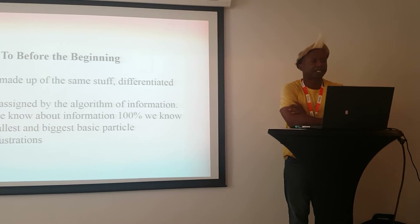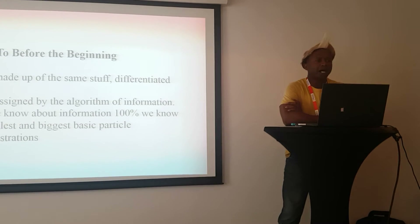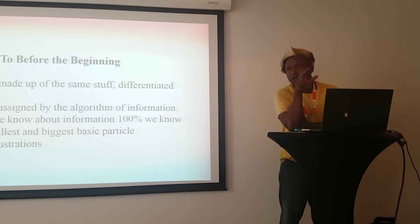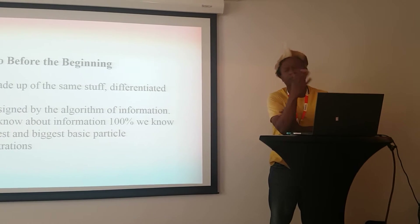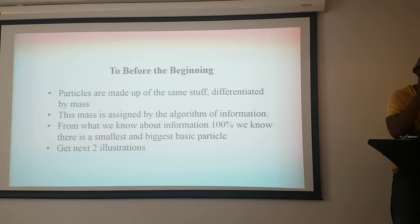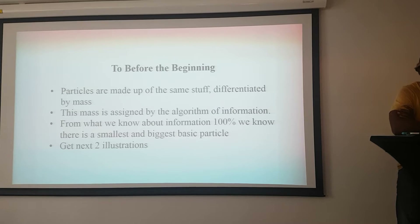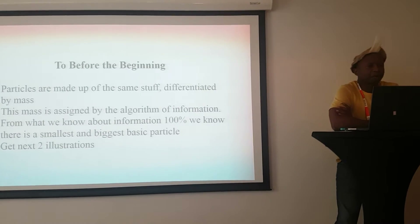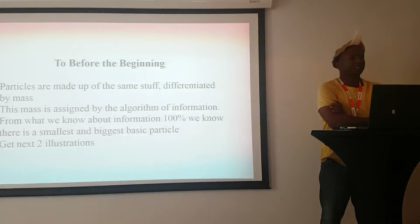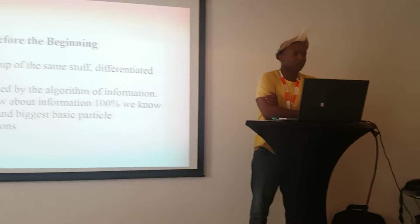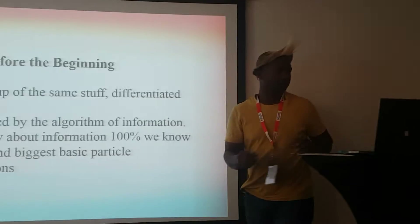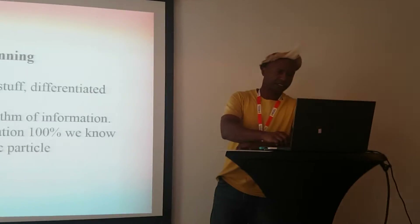Particles are made up of the same stuff. If electrons, protons, and quarks are made up of the same stuff, so are neutrinos and all other particles — everything. The mass is assigned by the algorithm of information. From what we know about information, we know with 100% certainty there is a smallest and a biggest particle.